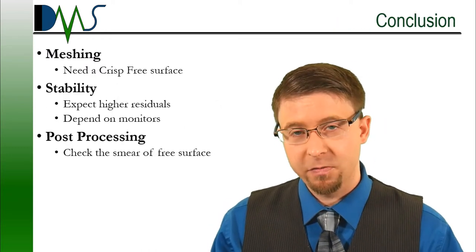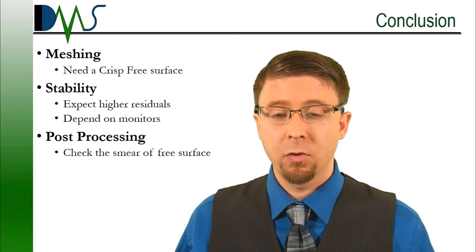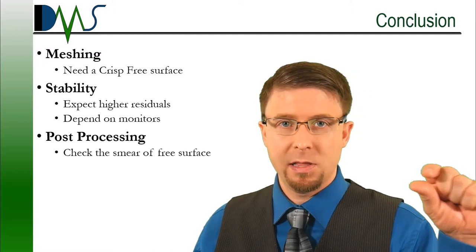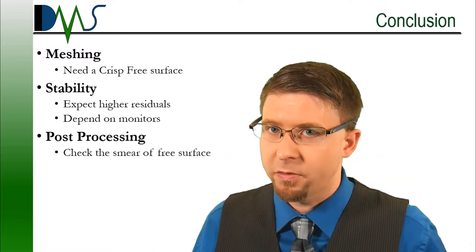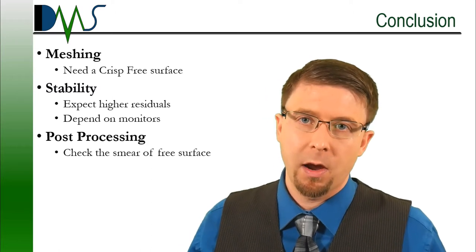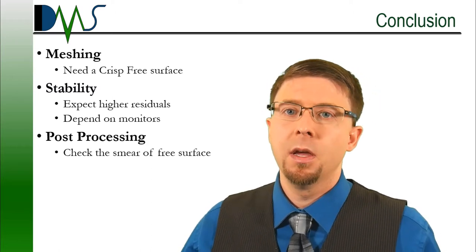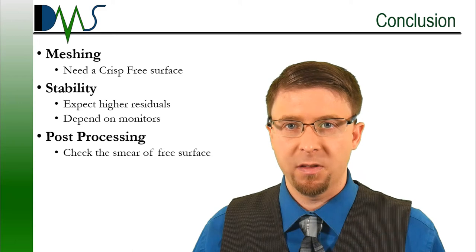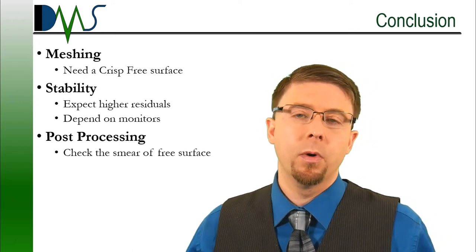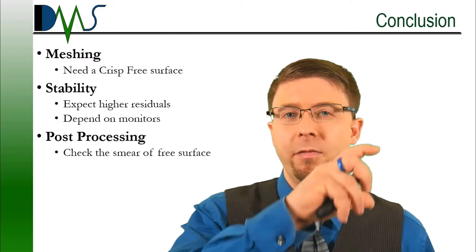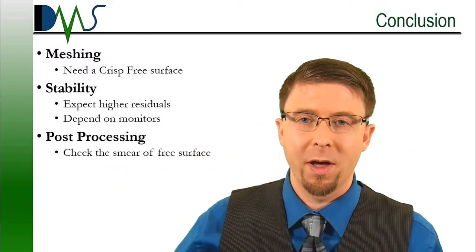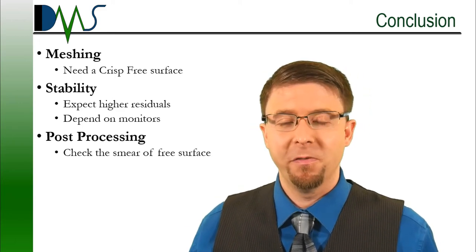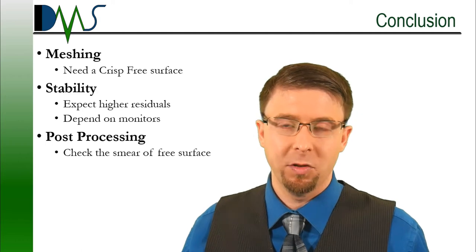That is the quick summary and introduction for practical tips on volume of fluid modeling. Quick recap: Meshing — you need to create a crisp free surface, put a lot of cells right there at the free surface, six to 12 cells. Stability — expect higher residuals, expect stability problems, and depend on your monitors when judging convergence; your residuals are going to be less reliable in this case. Post-processing — check the smear of that free surface, check whether you have a fog over the whole of your body versus just a small region. And really, patience when dealing with volume of fluid — there's a lot of things that can go wrong and a lot of stability problems that you can run into.